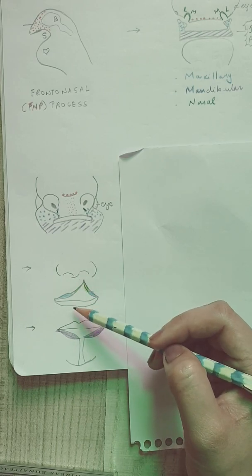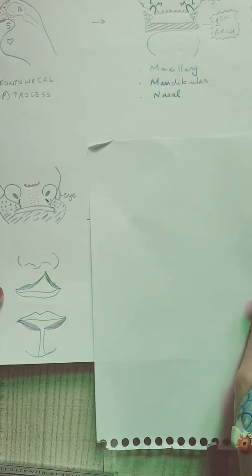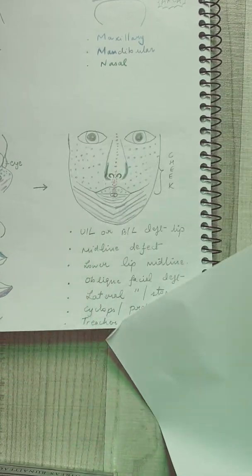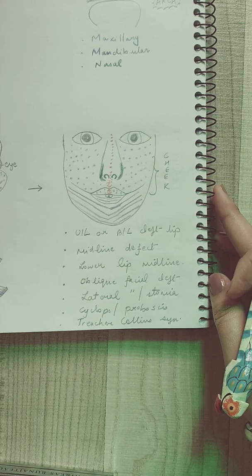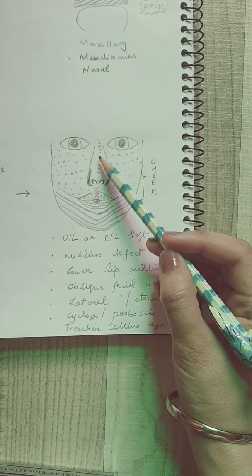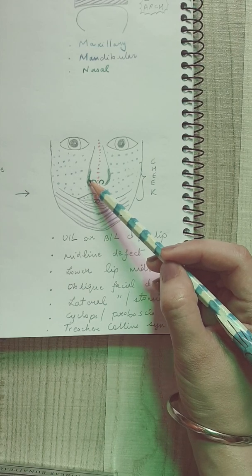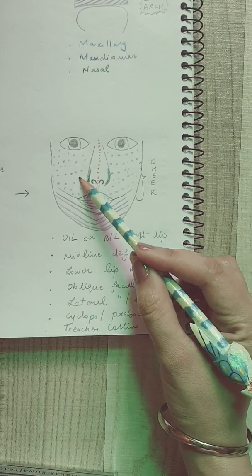This is the final picture that we are going to see. What is important is the fusion of all these processes, which looks something like this. It's a little funny picture, but it's going to basically summarize all the processes together: the midline frontonasal process, the medial and the lateral nasal processes, the maxillary and the mandibular processes.